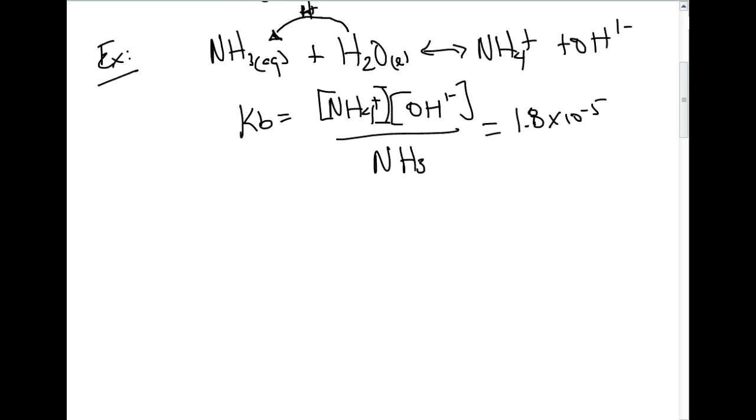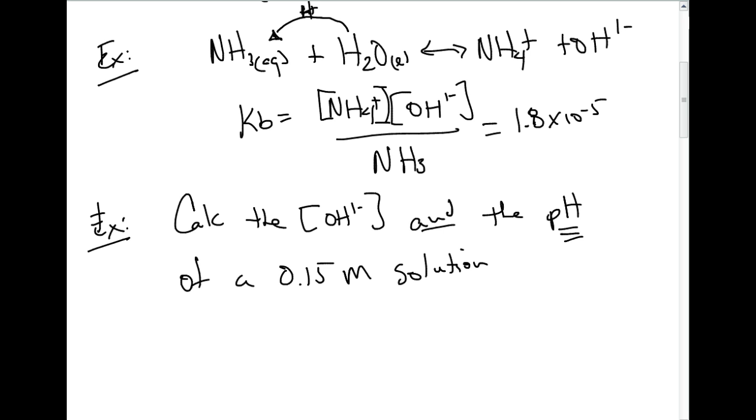Now that we're given this, we can do a problem involving this, and these problems work exactly the same way as our KA problems do, and there's just one little curveball. The problem is going to be calculate the concentration of the hydroxide solution and the pH of a 0.15 molar solution of NH3, given KB equals 1.8 times 10 to the negative 5th.